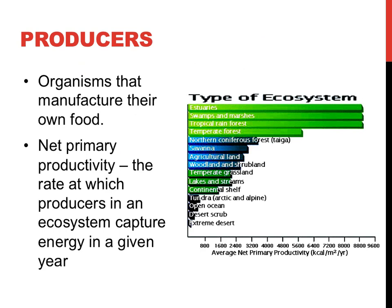All living things need energy. One way that organisms can be classified is by the way that they obtain their energy. Some organisms, generally referred to as autotrophs or producers, make their own food. Most producers use energy from sunlight to do photosynthesis to make that food. Producers are the base of communities and provide, directly or indirectly, all the resources available for other organisms.